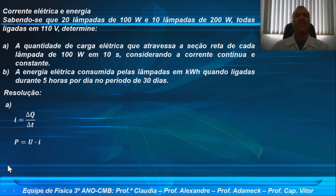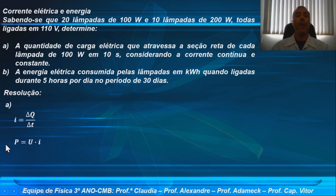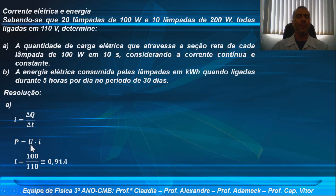Essa é a relação P igual a U vezes I, em que P é a potência, U é a diferença de potencial e I a intensidade de corrente elétrica. Por meio dessa relação, eu posso encontrar exatamente qual a intensidade de corrente elétrica que está atravessando a lâmpada de 100 watts. Isolando a intensidade de corrente, eu vou passar a DDP para o outro lado da igualdade, dividindo.